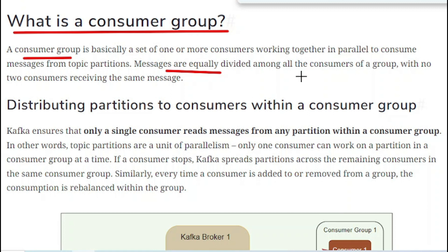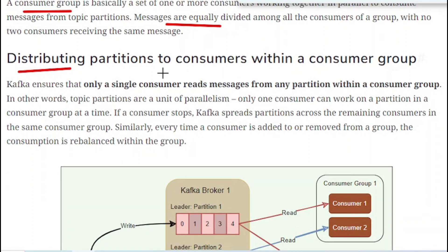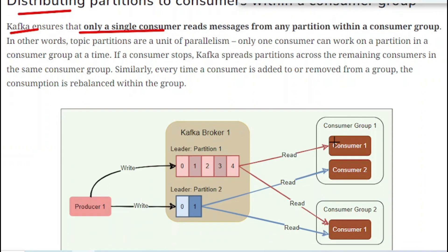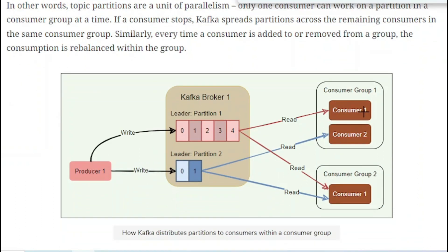Messages are equally distributed among the consumers present in the group, and Kafka also makes sure that two consumers will not get the same messages. Now let us see how partitions are distributed to consumers within a consumer group. Partitions are equally distributed among the consumers within a consumer group. Kafka ensures that only a single consumer reads messages from any partition within a consumer group.